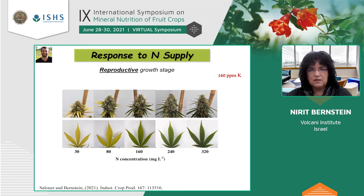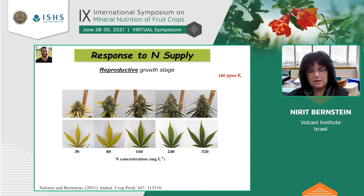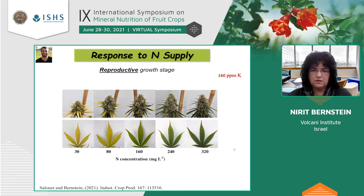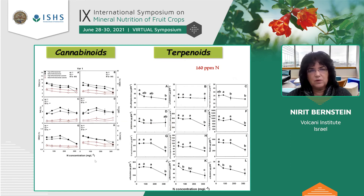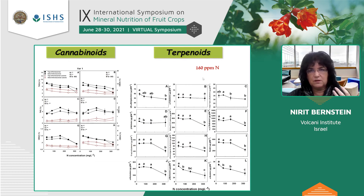Looking at the reproductive stage for nitrogen, we saw similar deficiency responses — deficiency symptoms under 30 to 80 mg/L. The plants looked a bit smaller, the leaves looked deficient, and even the inflorescence leaves — so-called sugar leaves — looked yellowish. Just by judging the way the plant looked, 160 ppm would have been a good choice, or even switching to 240. But when we checked the secondary metabolite profile — looking at cannabinoids or terpenoids — most of them were higher under the low concentration of nitrogen as well.